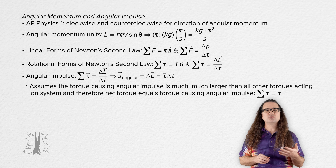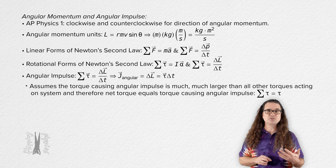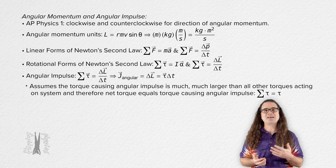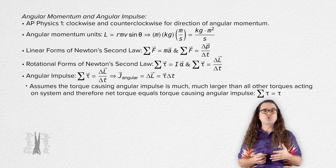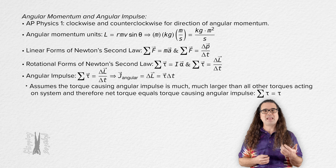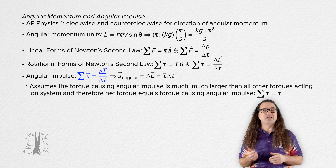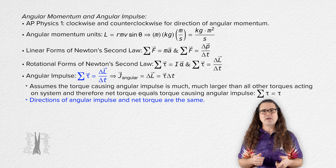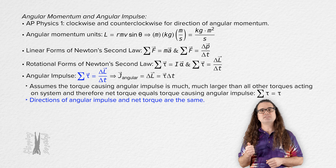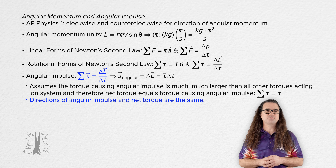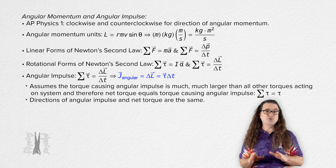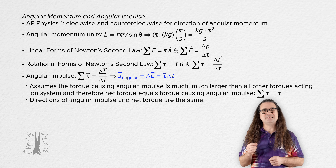This derivation assumes the torque causing the angular impulse is much larger than all other torques acting on the system, so the net torque equals the torque causing the angular impulse. Because angular impulse and torque are vectors, the direction of angular impulse is the same as the direction of the net torque acting on the system. That accounts for two of the things angular impulse is equal to; however, there are actually three.